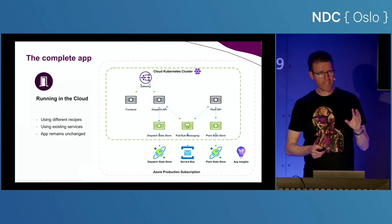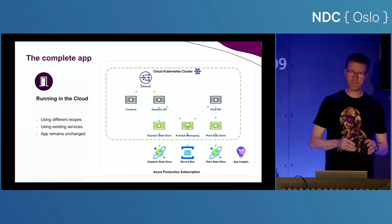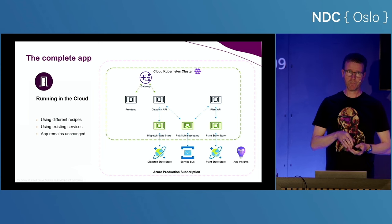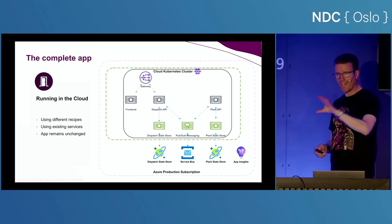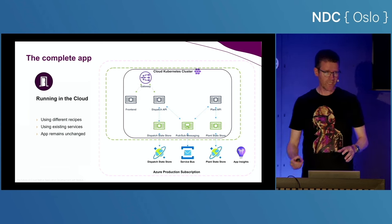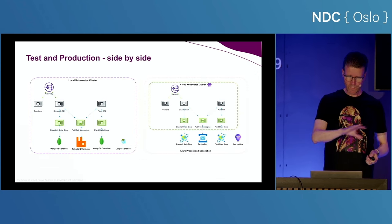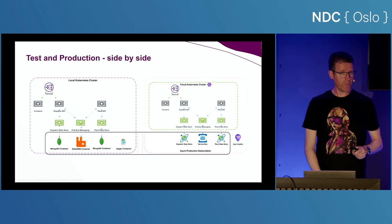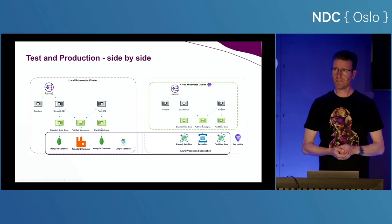The production environment looks very similar to the previous picture. The application itself has not changed — it will be exactly the same. But by using different recipes, I'm exchanging MongoDB for Cosmos, RabbitMQ PubSub for Service Bus, and Jaeger for App Insights. The highlighted area — the application model — doesn't change across multiple environments. By adding the right recipes, you can flip in the right resources in the back. As you can see: on the left everything is running on the cluster; on the right only the compute bits are running on the cluster, and cloud services are used for state and messaging.